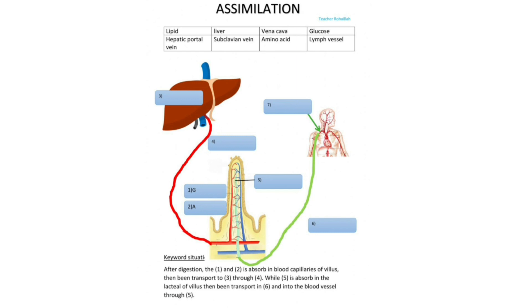In this picture you can see that various things happen. The lipids are actually stored in the hepatic portal veins and liver, in the subclavian veins, the vena cava, amino acids, and glucose. Lymphatic vessels, here you can see the numbered parts are there like 2a and 2b.